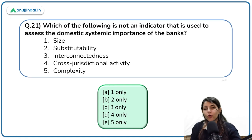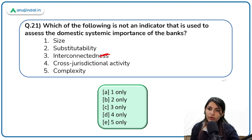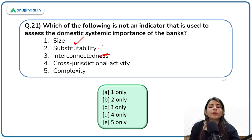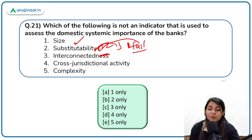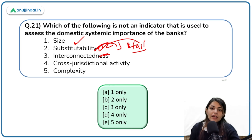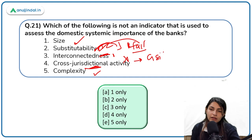Which indicator is not used to assess D-SIB importance? The parameters are: size — yes; substitutability, meaning can we substitute these banks if they fail — yes; interconnectedness — yes; complexity — yes; cross-jurisdictional activity — this is for global systemically important banks, not domestic. So cross-jurisdictional activity is not an indicator for D-SIBs.